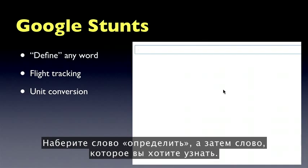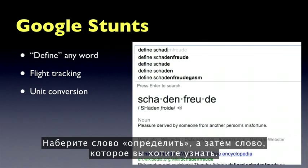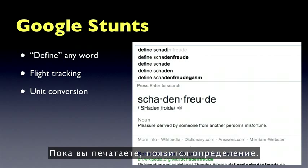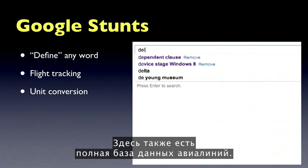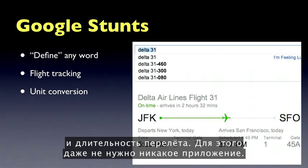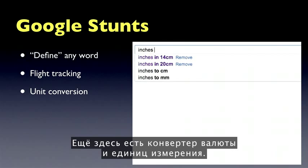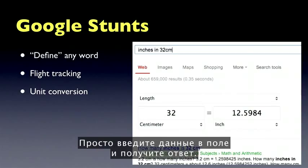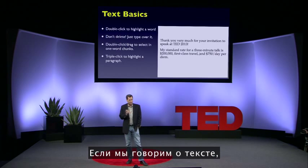Most of you think of Google as something that lets you look up a web page, but it is also a dictionary. Type the word 'define' and then the word you want to know — you don't even have to click anything, the definition appears as you type. It's also a complete FAA database: type the airline and flight number and it shows you where the flight is, the gate, the terminal, how long until it lands. You don't need an app for that. It's also a unit and currency converter — just type it into the box and there's your answer.